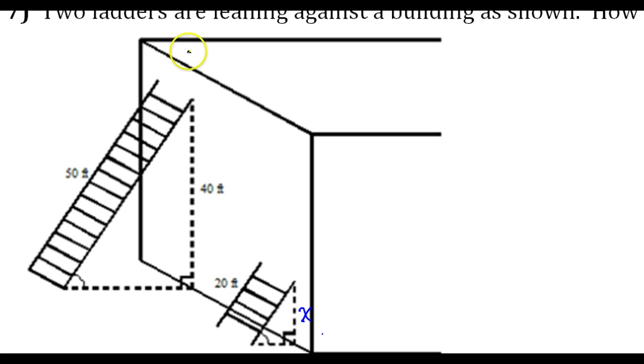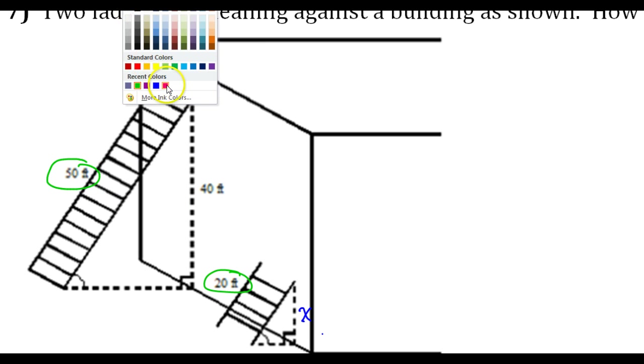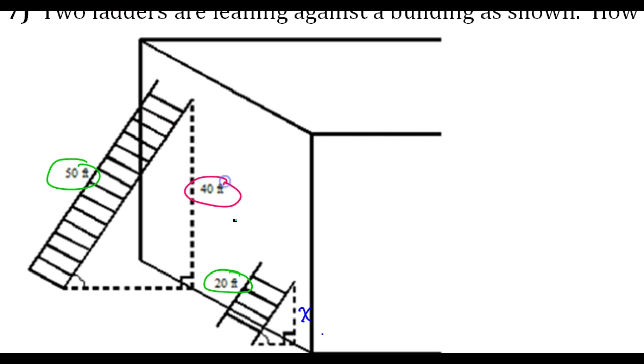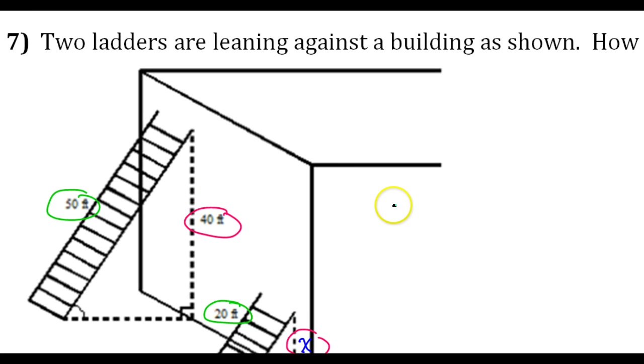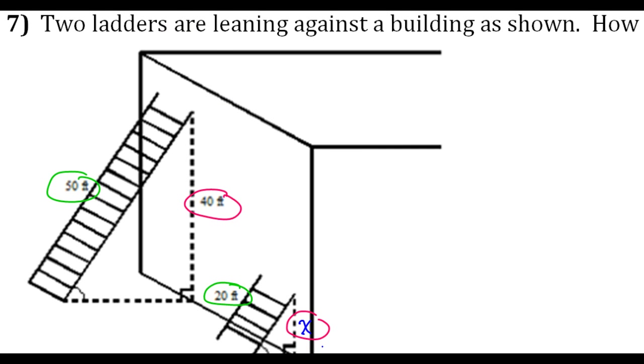Okay, so let's start off with the corresponding sides. So the 20 and the 50 are going to be corresponding. And then, on the other hand, the 40 and the x are going to be corresponding. So let's make two fractions out of those. Let's make a proportion. I'm going to do green over green equals pink over pink.